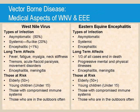For both West Nile virus and Triple E, there are three types of infection: asymptomatic, systemic flu-like, and encephalitic severe. For both viruses, it is rare that the victim contracts the encephalitic type of infection. The long-term effects include paralysis, cognitive disorders, and movement disorders. These severe cases usually lead to encephalitis or meningitis. In Triple E, a third of all cases end in death, but it is much rarer than West Nile virus. Those who are primarily at risk for these viruses are those under the age of 15 or older than the age of 50.